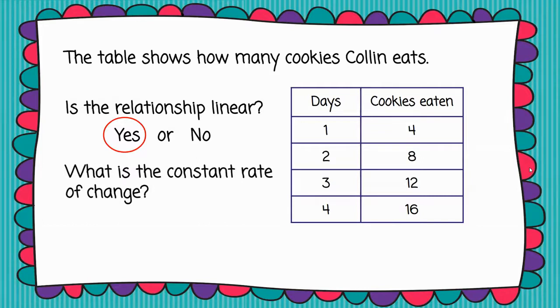And what is the constant rate of change? Well, that's the pattern we've been talking about, right? So that is where he is adding four each and every time. So we say the constant rate of change is positive four.